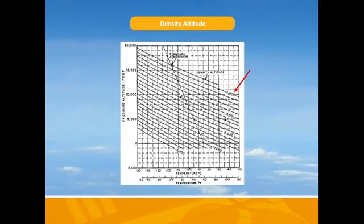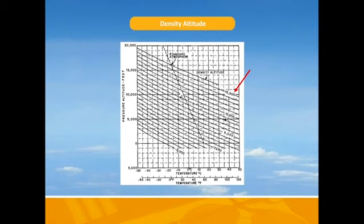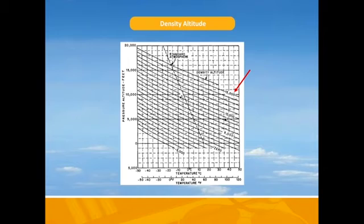Now that we have our pressure altitude we need to compute our density altitude. Density altitude is pressure altitude corrected for non-standard temperature. Standard temperature is 15 degrees Celsius. Airplanes like dense air, where the air molecules are closer together. As altitude increases the air becomes less dense and therefore our plane's performance starts to drop. On hot summer days our density altitude will be much higher than our actual or indicated altitude. With smaller planes the max altitude they can climb to could be very low compared to commercial jets. When we flight plan we need to ensure our plane can get to the indicated altitude we need for safety of flight.